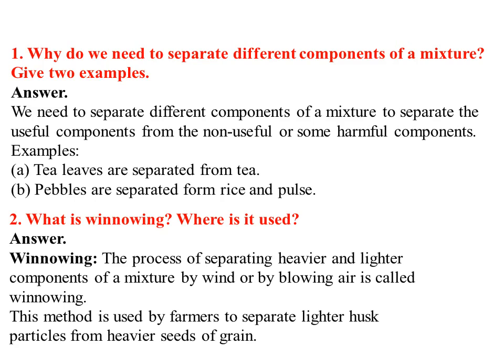First question: Why do we need to separate different components of a mixture? Give two examples. We need to separate different components of a mixture to separate the useful components from the non-useful or harmful components. Examples: tea leaves are separated from tea, and pebbles are separated from rice and pulses.